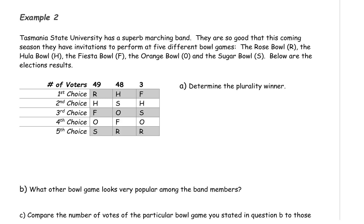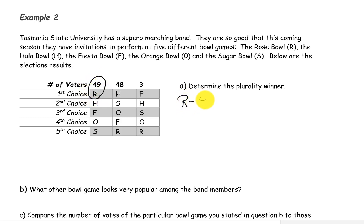We want to determine the plurality winner. The plurality winner is the bowl that has the most first place votes. We can see from our preference schedule that the Rose Bowl R has 49 first place votes.